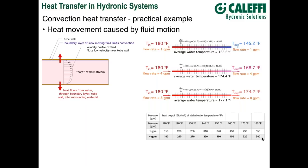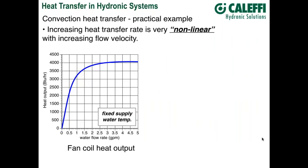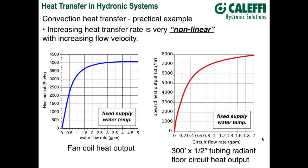Summary: heat transfer rates always increase with increasing flow velocity because of the thinning of the boundary layer and the increase in the convection coefficient. That effect is very non-linear — doubling the flow rate does not double the rate of heat transfer. Based on rating data for a small fan coil at a fixed supply water temperature, at very low flow rates you see a rapid increase in heat output, but at higher flow rates the heat output continues to go up at a diminishing rate. This is also true with other hydronic heat emitters.